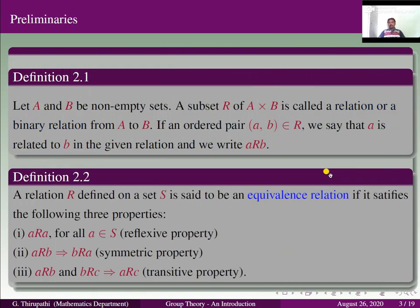With this introduction, we go to some preliminaries required for group theory. First of all, what is meant by a relation? Consider two non-empty sets A and B. A subset R of A cross B is called a relation or a binary relation from A to B. If an ordered pair (A, B) belongs to R, we say that A is related to B and we write A related to B.